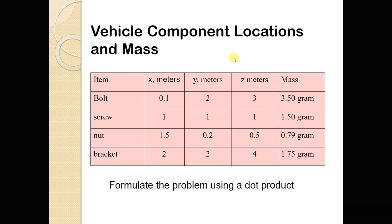The book has decided that we're going to find the center of mass of some item, but all we have is a bolt, a screw, a nut, and a bracket. Presumably, we would have a larger, more complicated object that we're finding the center of mass of, and this is just a small piece of it as a demonstration.